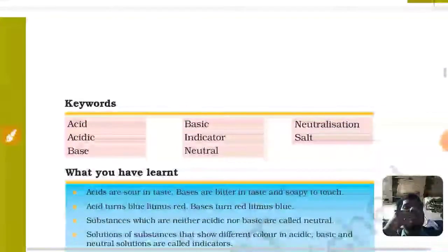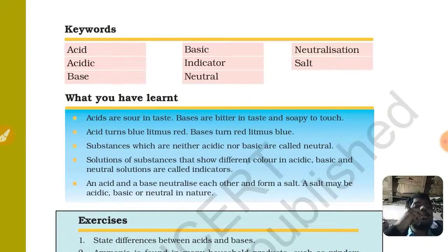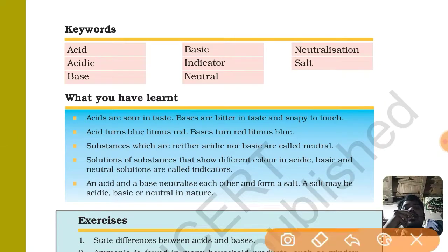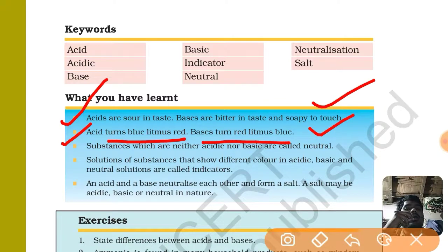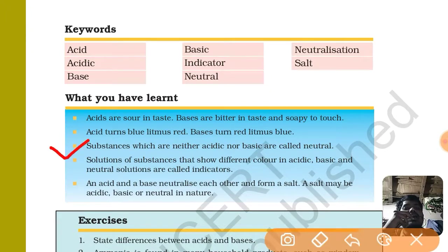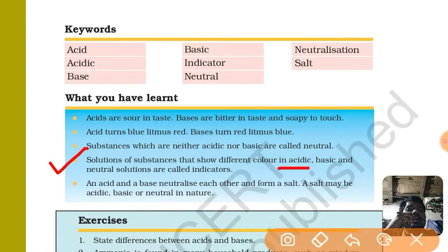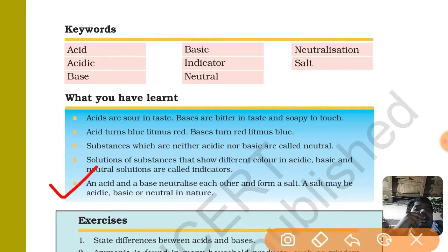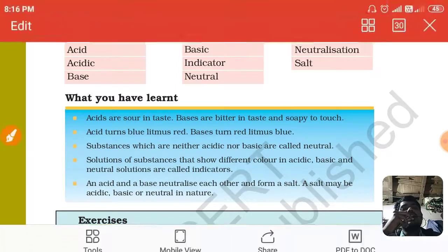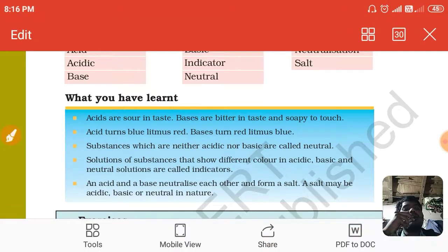This is all about this chapter. Let me recap the important points: acids are sour in taste, bases are bitter in taste and slippery to touch. Acids turn blue litmus to red; bases turn red litmus to blue. Substances which are neither acidic nor basic are called neutral. Substances used to check whether a substance is acidic, basic, or neutral are known as indicators. When acid and base react with each other they neutralize each other's effect - this is called neutralization reaction - producing salt and heat.